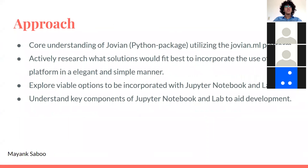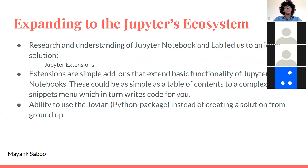To approach this project, we first needed a core understanding of what the Jovian Python package is about and how it ties up with the platform. We also actively researched throughout the project to find ideal solutions that were elegant and simple. We had to understand key components of the Jupyter notebook and lab environment to aid our development. An ideal solution was to have a Jupyter extension — a simple add-on that adds more functionality to Jupyter Notebook and Lab, ranging from something as simple as a table of contents menu to something as complex as a code snippet menu. This gave us a great ability to use the Jovian Python library instead of building a solution from the ground up.